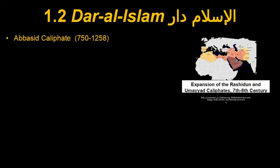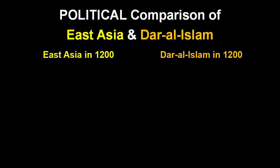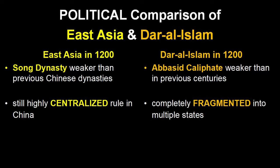1.2, Dar al-Islam, looks a bit different. We start off with the Abbasid Caliphate, which was at one point huge and very powerful, but by 1200 can barely be called a state. You still have the Caliph in Baghdad, and he's still the spiritual leader of Sunni Islam, but the Caliphate is fragmented into many different states. Both China and the Abbasids are weaker and smaller than they were in the past, but the Song Dynasty still has a highly centralized imperial bureaucracy.